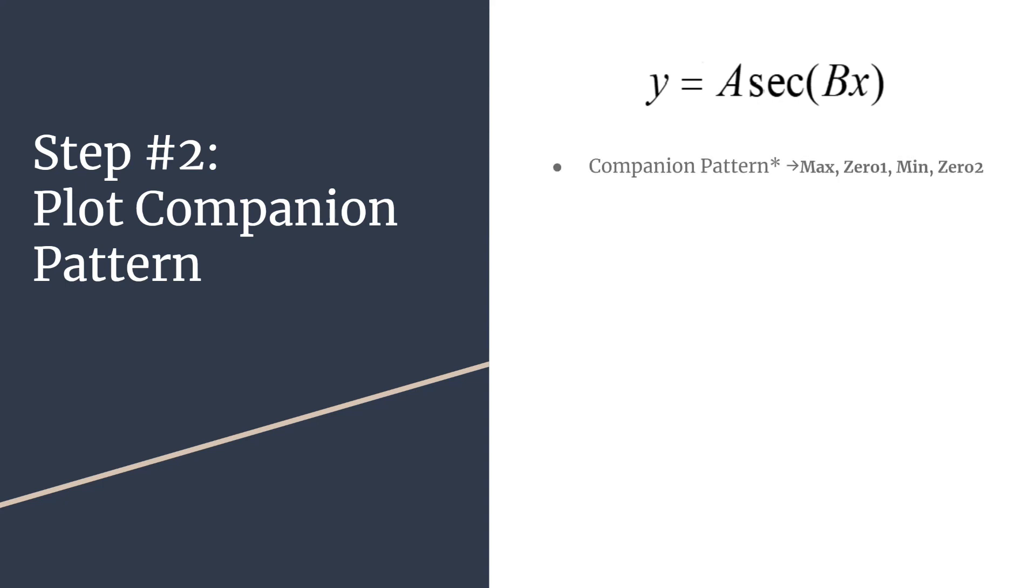But just to review, so the companion pattern, because cosine is our companion equation, it's going to be maximum, first zero, minimum, second zero. And that'll generate a really nice cosine pattern. Here's a little bit more detail about each of those points.